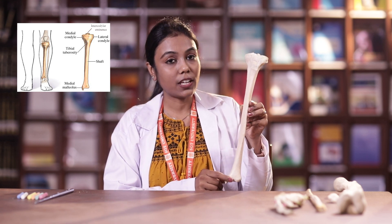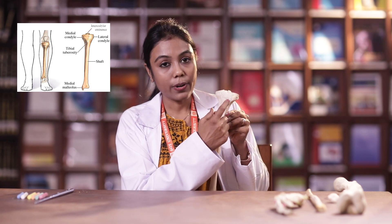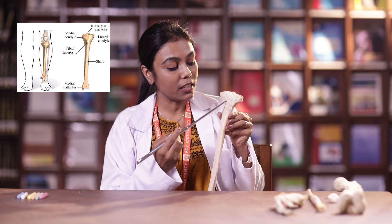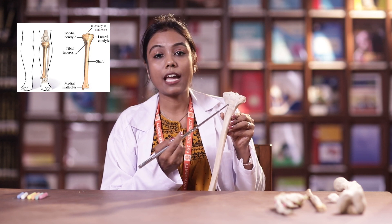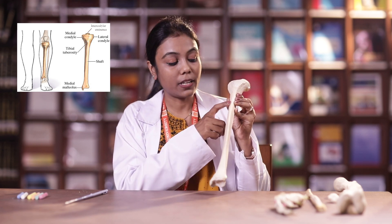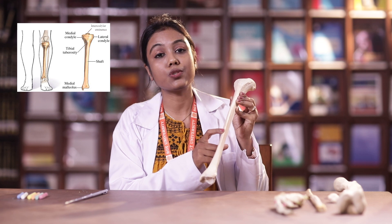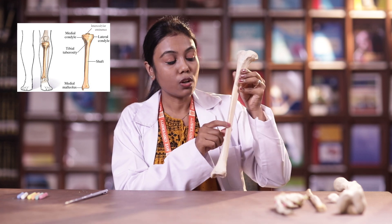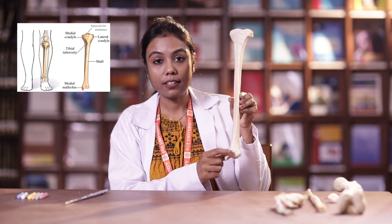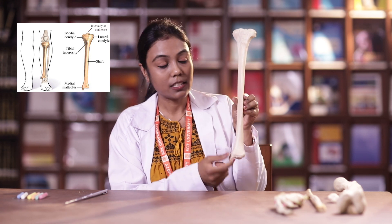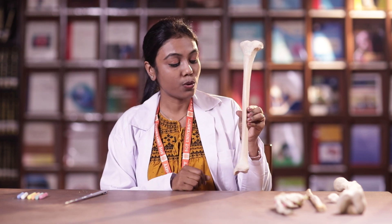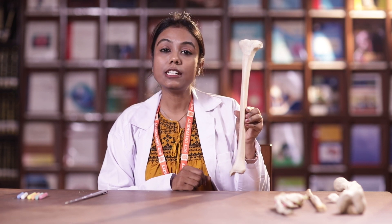The other points of identification include: on the upper end, anteriorly there is a tuberosity called the tibial tuberosity, which has to be placed anteriorly. The anterior border of the tibia is also sharp and that also has to be placed anteriorly. So when we hold the tibia, it should be held vertical with the upper end expanded, the lower end with the medial malleolus, and the sharp anterior border and tibial tuberosity facing anteriorly. Here in my hand is a left tibia.